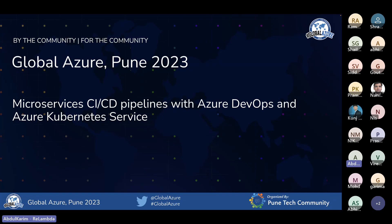Starting with the title right at the top: Microservices CI/CD Pipelines with Azure DevOps and Azure Kubernetes Service. This is what we'll be talking about in the first half.